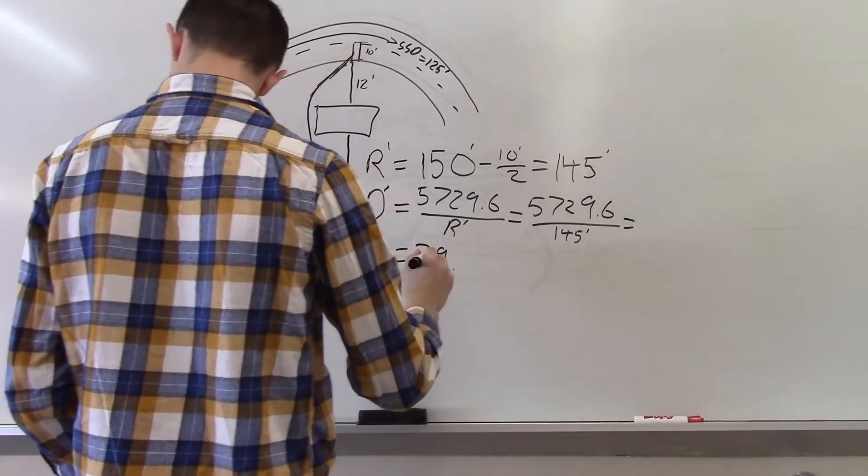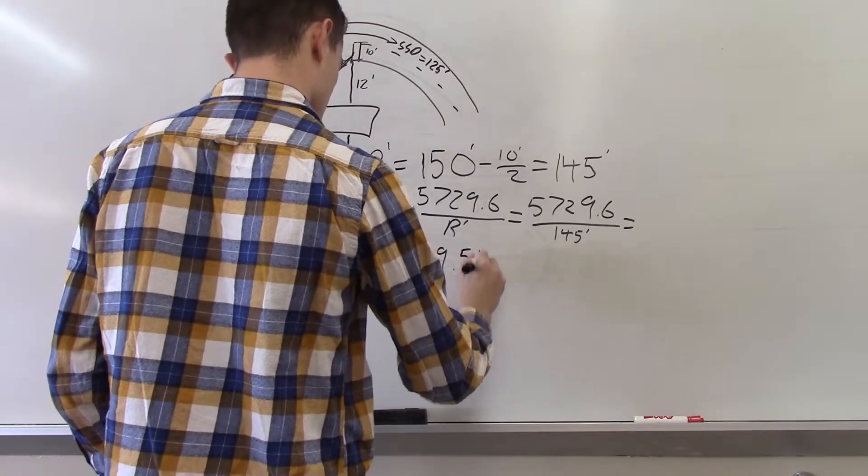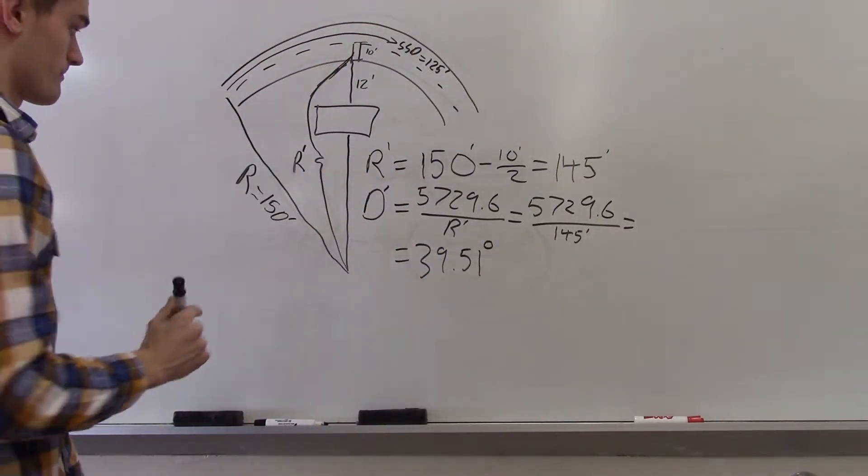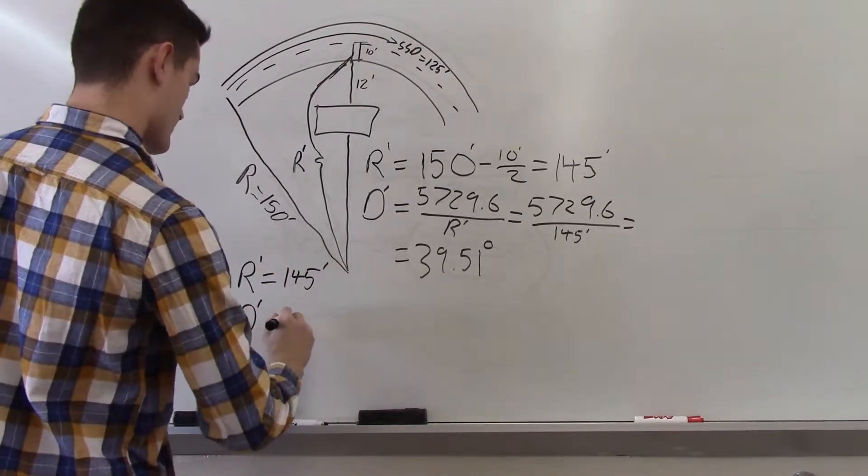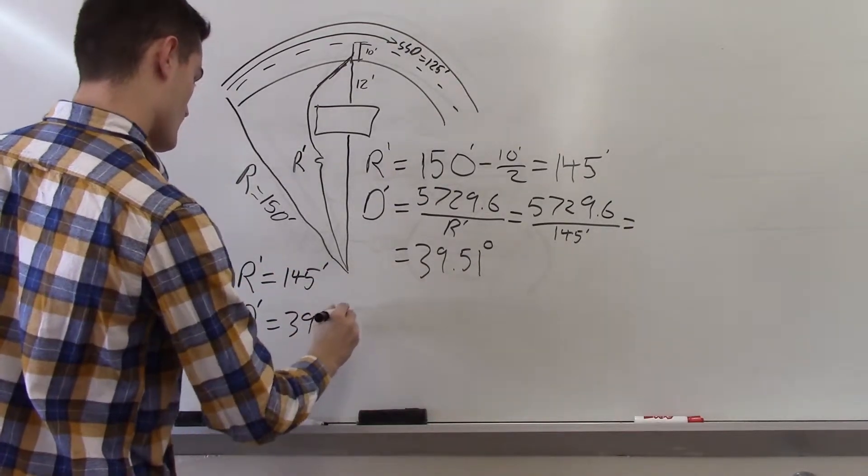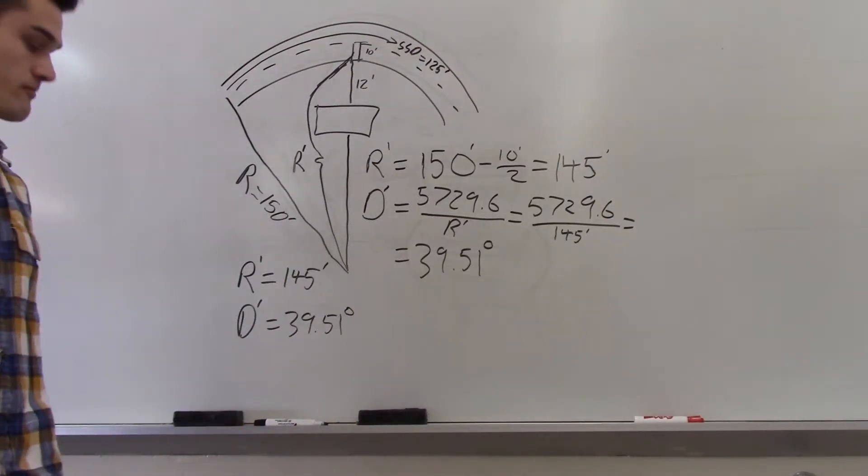To solve for D, we simply plug the new radius value into the equation D equals 5729.6 divided by the radius. This gives us a D value of 39.51 degrees.